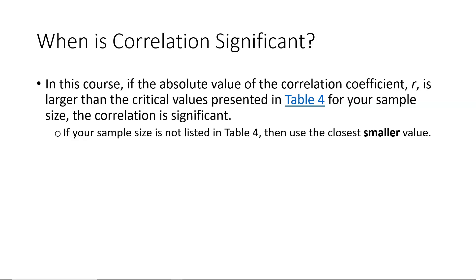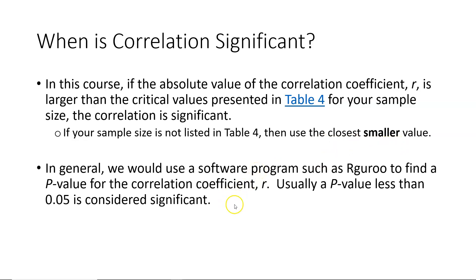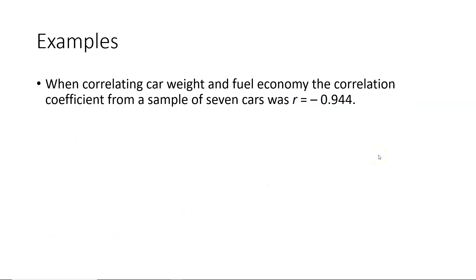The next question we need to address is: when is a linear correlation coefficient significant? In this course, if the absolute value of the correlation coefficient R is larger than the critical values presented in Table 4 of the alternate textbook for your sample size, then the linear correlation is significant. If your sample size is not listed in Table 4, you would use the closest smaller value. In general, we would use a software program to find a p-value for the correlation coefficient R — exactly what we do when we run a hypothesis test. Usually, a p-value less than 5% is considered significant. Let's look at some examples from Section 8.1 to determine whether two variables have a significant linear correlation.